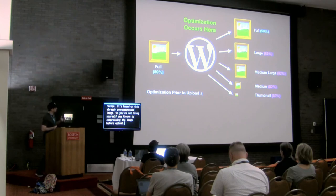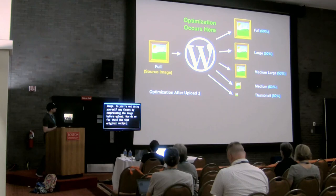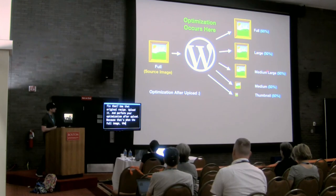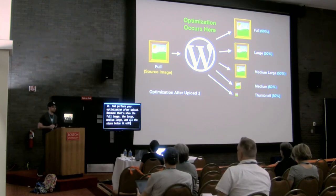How do we fix that? Use that original recipe, upload it, and perform your optimization after uploading. Because that's when the full image, the large, the medium-large, and all the sizes below it will get that same level of image compression.